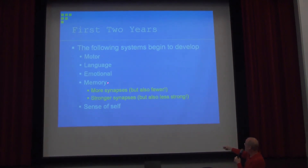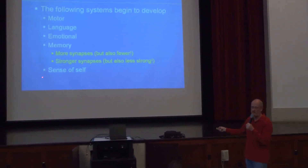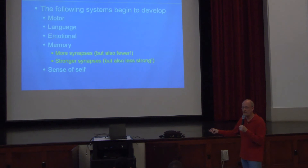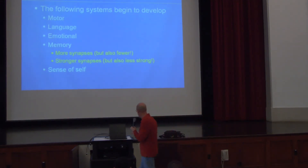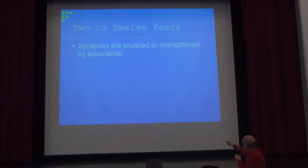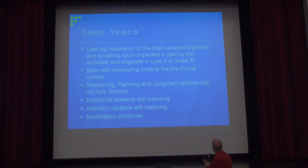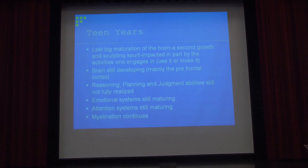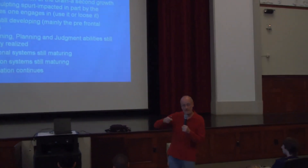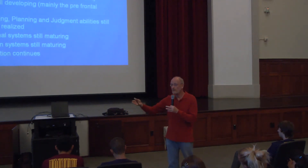There's a lot known about where various brain functions are localized. When you learn a motor skill, as you repeat the skill you strengthen the synapses — you may be increasing the amount of neurotransmitter, increasing the amount of post-synaptic receptors, in a variety of different ways. As you repeat the task, you're building and strengthening that circuitry.